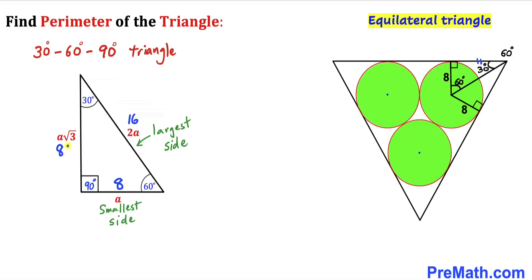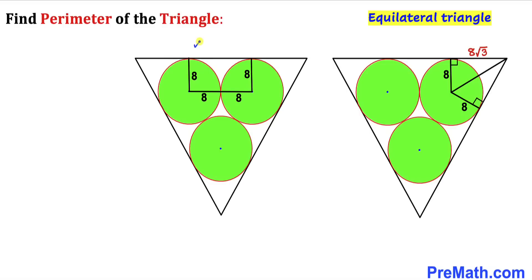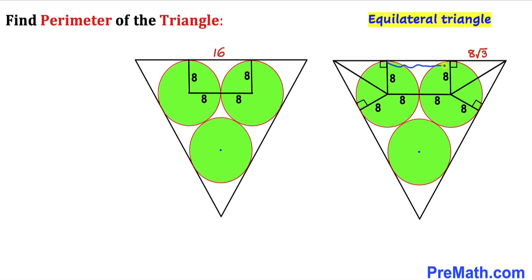If we call the smallest side 8 units, the largest side becomes 16, and the third side becomes 8 times square root of 3. In our triangle, our radius is 8, so our third side is 8 times square root of 3. Looking at the diagram, the two radii along the base are 8 and 8, so the total distance between the tangent points is 16 units. And since this side length equals this side length, both tangent segments from the corner are 8 times square root of 3.